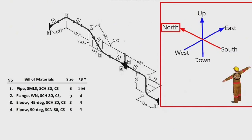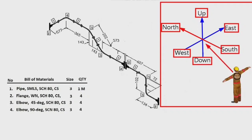North direction, south direction, east direction, west direction, up direction, down direction. The person reading the drawing should imagine himself facing north, provided that he is in the center of these directions. Now that we know the names of the directions, we can read this drawing.